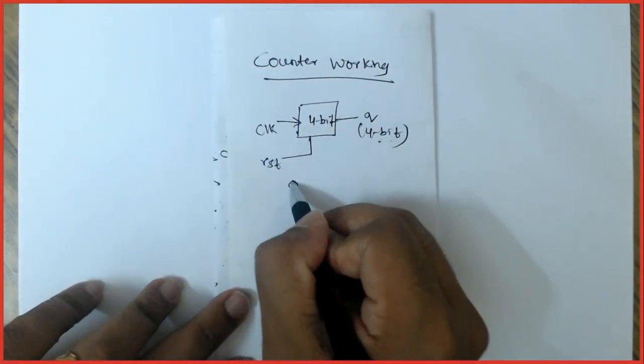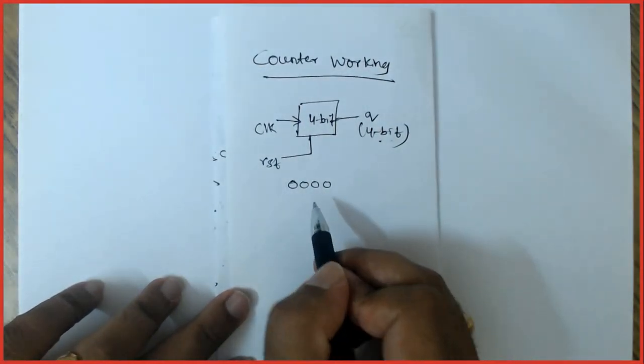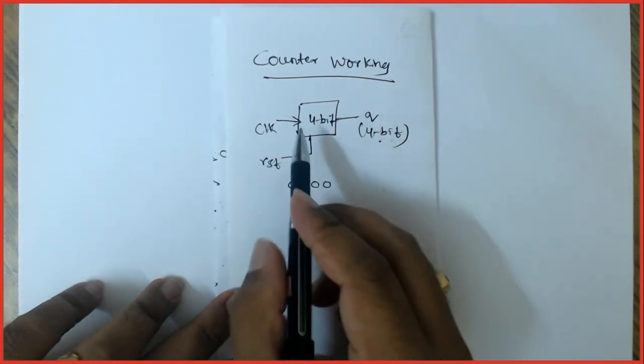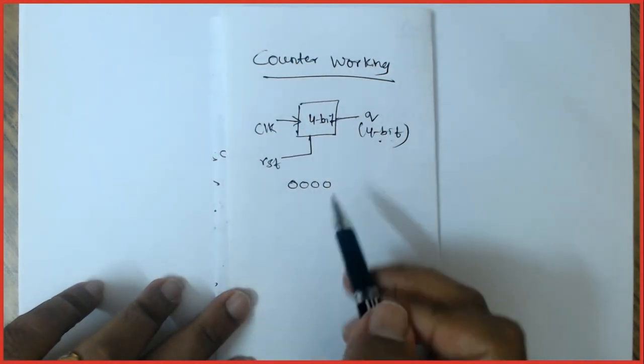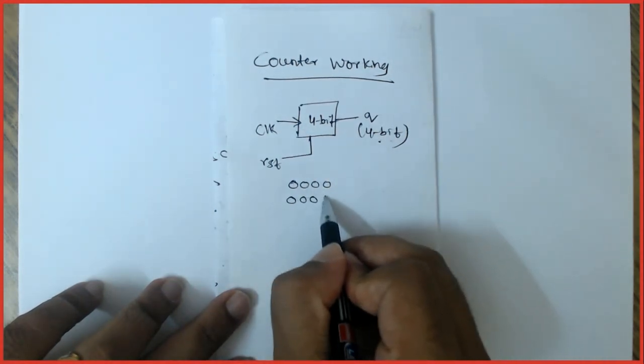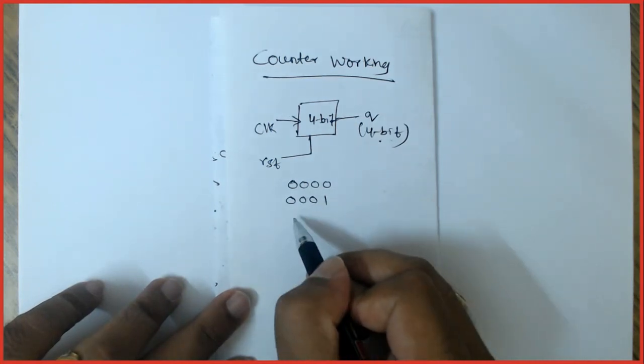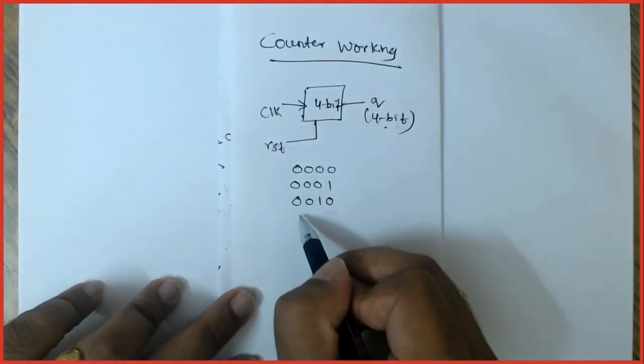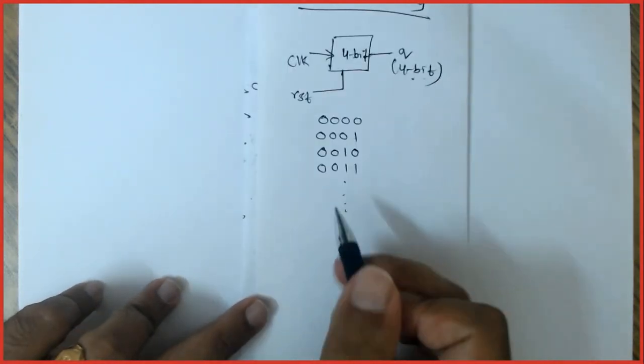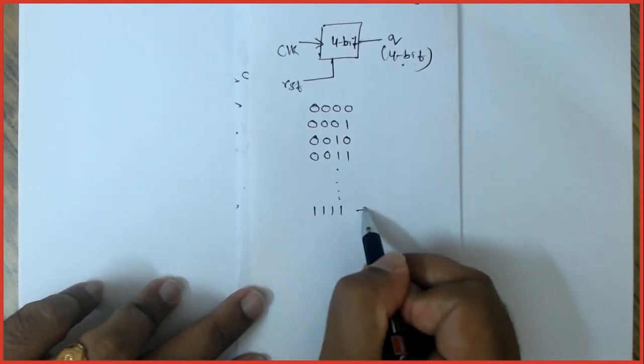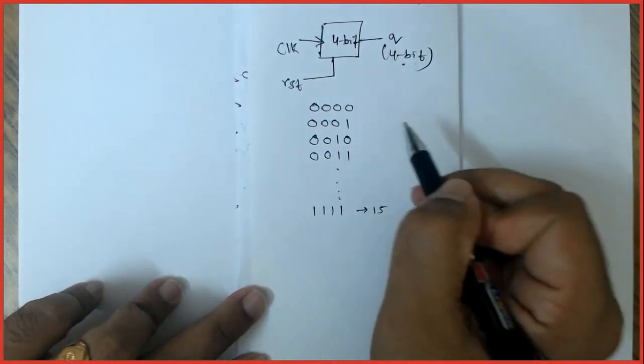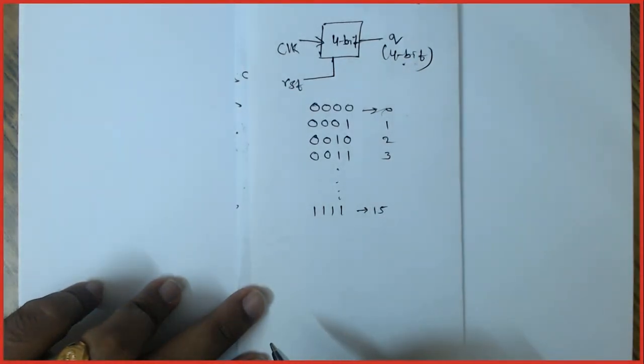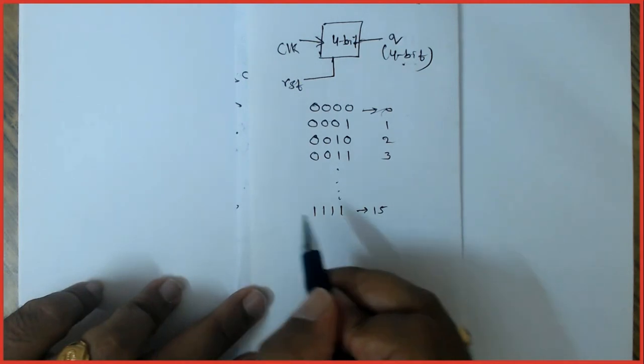In 4-bit, the start value is 0000 binary. When the counter encounters a positive edge or a negative edge based on what you have defined—assuming it to be a positive edge—it increments by 1. In the next positive edge it will increment one more time, and similarly it goes on till the maximum being 15 in decimal.